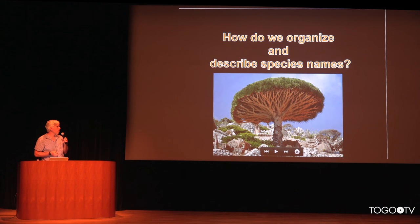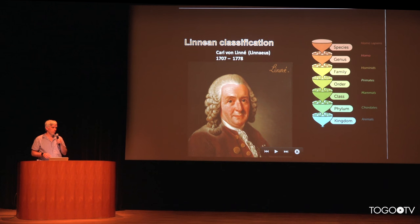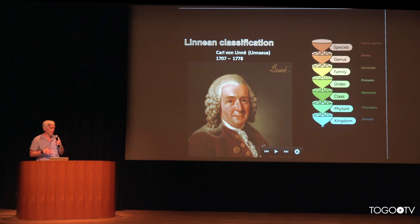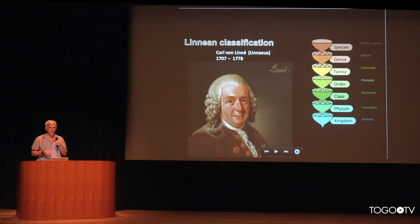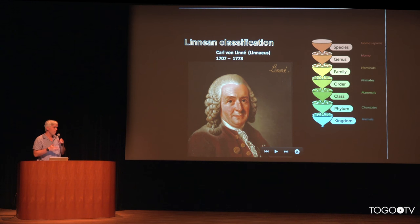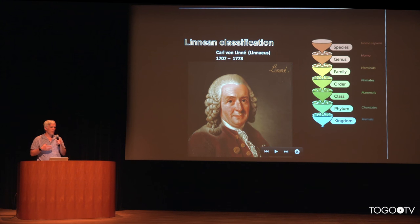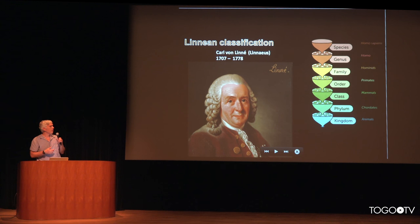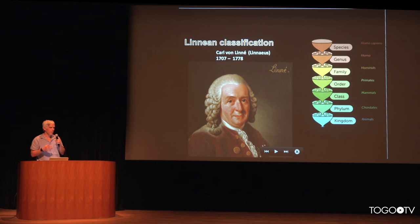I will continue to talk about how we organize and describe these species names. Taxonomy is a discipline that looks forward and backward. We rely on some very old principles introduced by Carl von Linnaeus almost 300 years ago, which predates a lot of concepts in modern biology. But we still apply the classification he introduced. On the right-hand side, you can see the different hierarchical structures used to organize biological information.